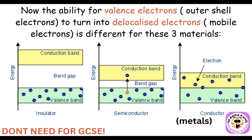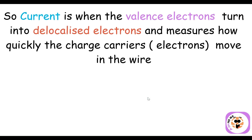For an insulator, there's a very big gap between the valence band and conduction band, meaning it takes a lot of energy for outer shell electrons to become delocalized — that's why insulators are poor conductors of heat and electricity. Semiconductors have a small band gap, so it takes a little less energy. For metals, the two bands actually overlap, so all outer shell electrons are already delocalized electrons.